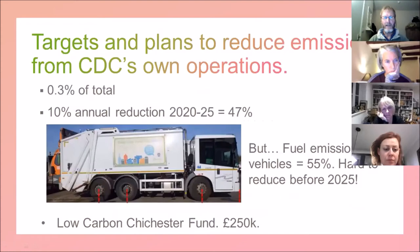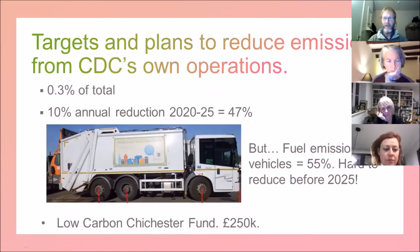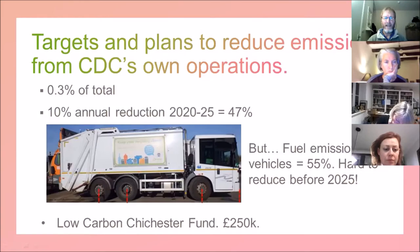Section B is how the plan envisages reducing the District Council's own operational carbon emissions. Their own emissions are only 0.3% of the total district emissions, so it's very small. However, they do intend to do a 10% annual reduction from 2020 to 2025, which implies a 47% reduction by 2025.